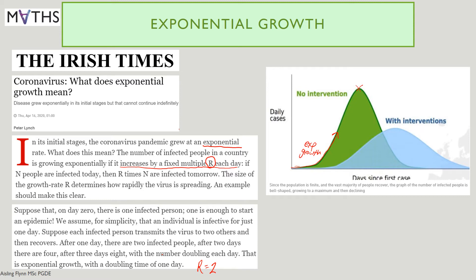Notice there is, doesn't max out. Since the population is finite, there is a fixed population, and the vast majority of people recover. The graph of the number of infected people is bell-shaped. It grows to a maximum and then declines after people have contracted the virus and recovered. With interventions, this is what the government intends to do when they impose restrictions to stop people moving and mixing. We call that flattening the curve to keep the numbers down.